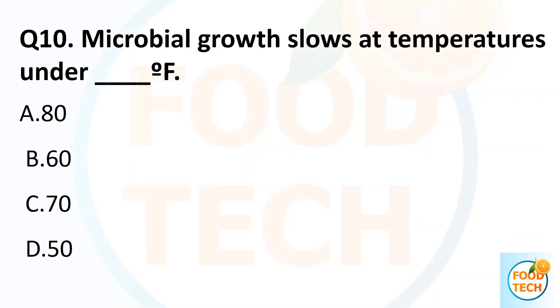Question 10. Microbial growth slows at temperature under dash Fahrenheit. A. 80. B. 16. C. 17. D. 50.